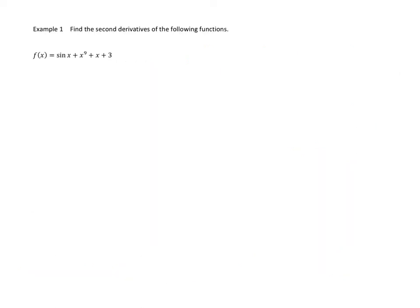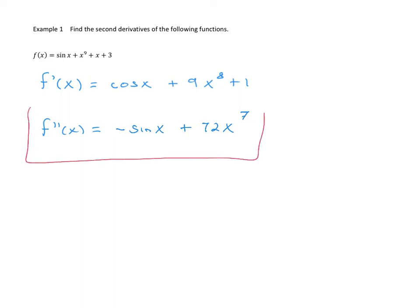In example one, let's get some practice taking a second derivative of a given function. With this function f of x, if you want the second derivative, you must first find the first derivative: cosine of x plus 9x to the eighth plus 1. If we want the second derivative, we take the derivative of the first derivative. The derivative of cosine is negative sine of x. The derivative of 9x to the power of 8 is 72x to the seventh. The derivative of 1 is 0. And this is our answer.